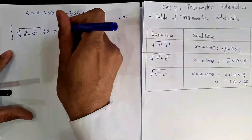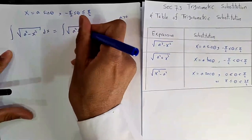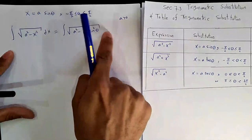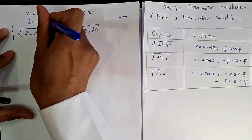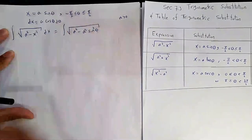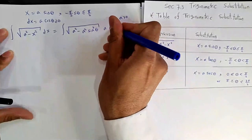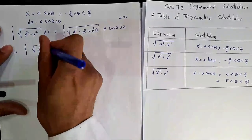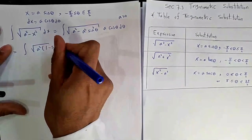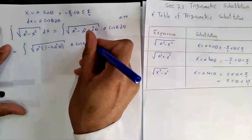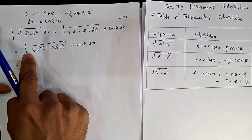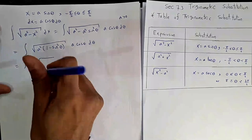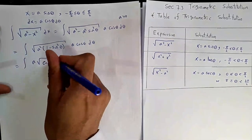Why do we use this substitution? The reason is to break out this root. Let us take x = a sin θ where θ ∈ [-π/2, π/2]. Then root(a²-x²) becomes root(a² - a² sin²θ). We take a² as a common factor under the root to get a·root(1 - sin²θ), which is a·root(cos²θ).